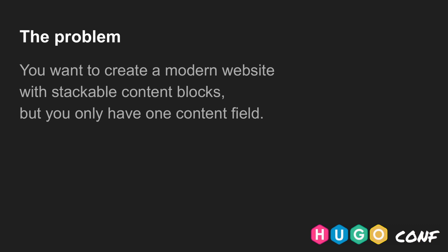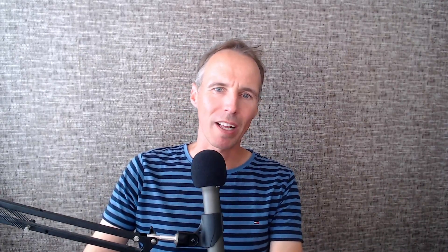Let's start with the problem. Pages in modern websites often consist of content blocks that are stacked on top of each other. They may have different content and different background colors. This requires you to split your page into separate parts. However, your typical Hugo page looks something like this, where you have a paragraph, maybe a shortcode, and maybe another paragraph.